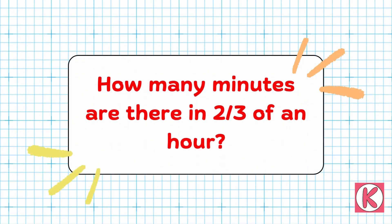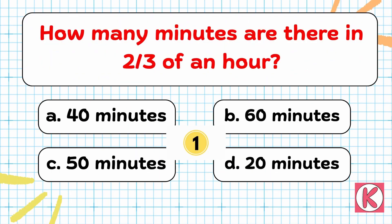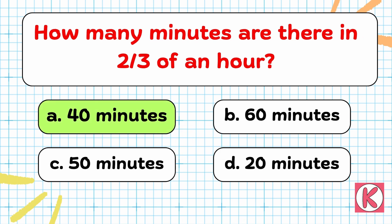Next question. How many minutes are there in 2 by 3 of an hour? Correct answer: Option A — 40 minutes.